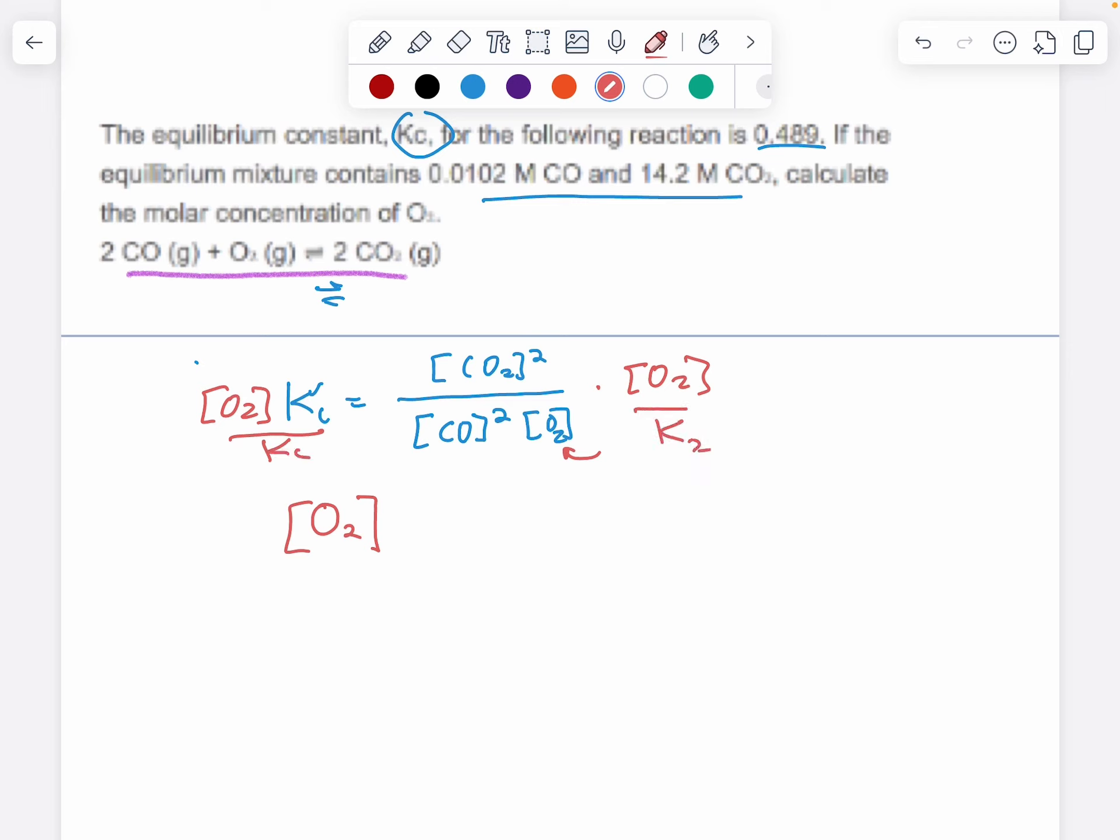And then I'm also going to divide both sides by the equilibrium constant. When I do that, the O2 cancels and the Kc cancels on the left side. What I'm left with on the left side is the concentration of oxygen, which is what we're trying to solve for.